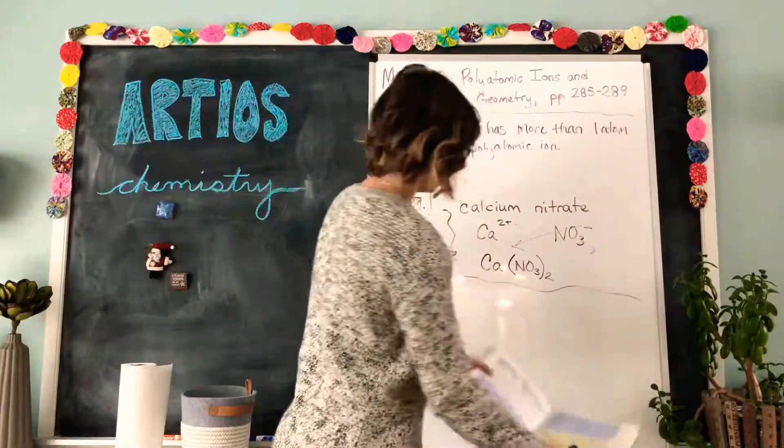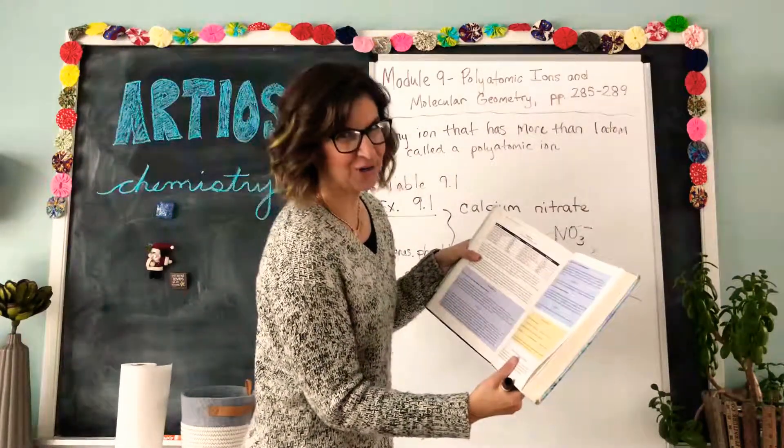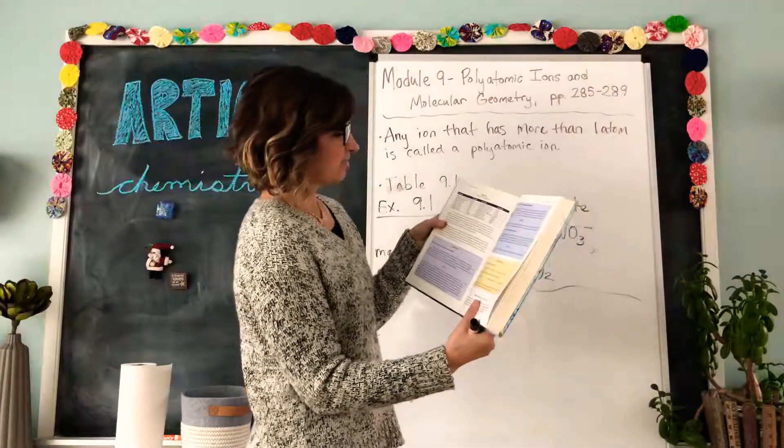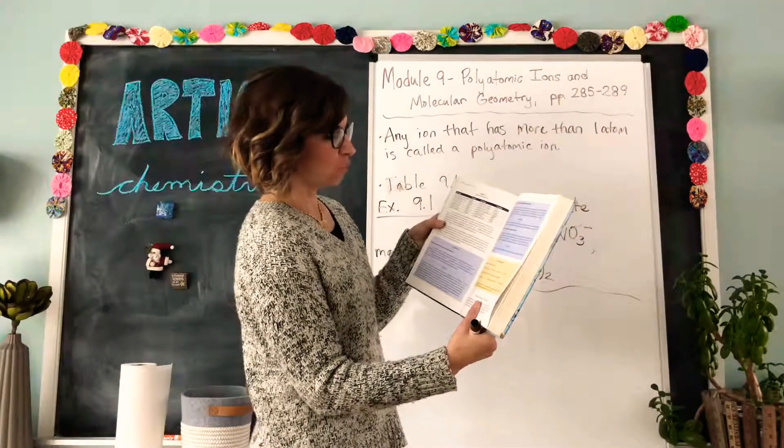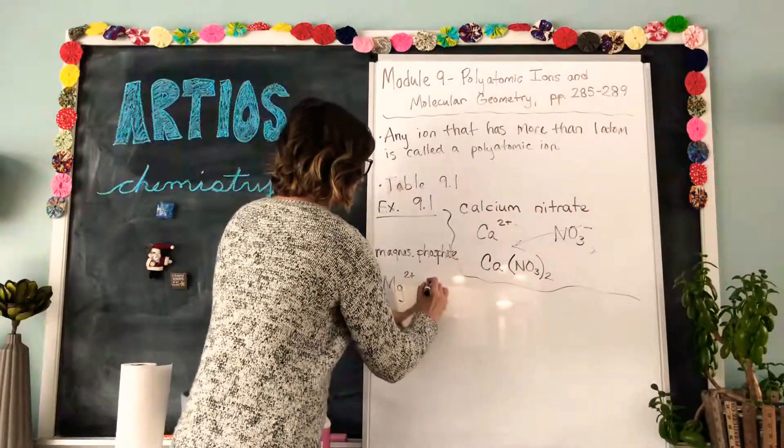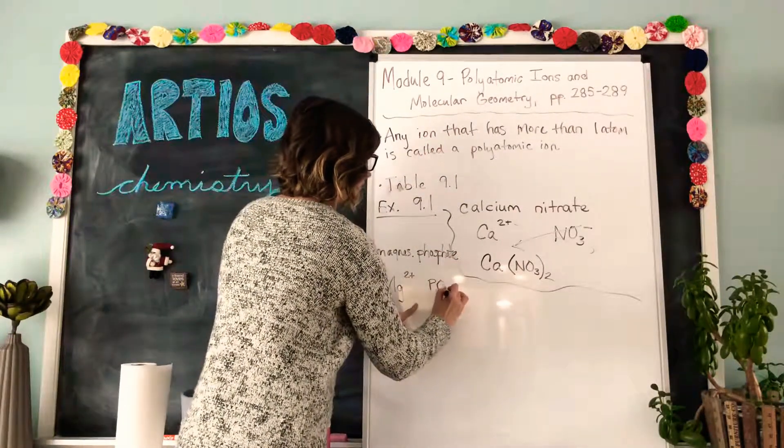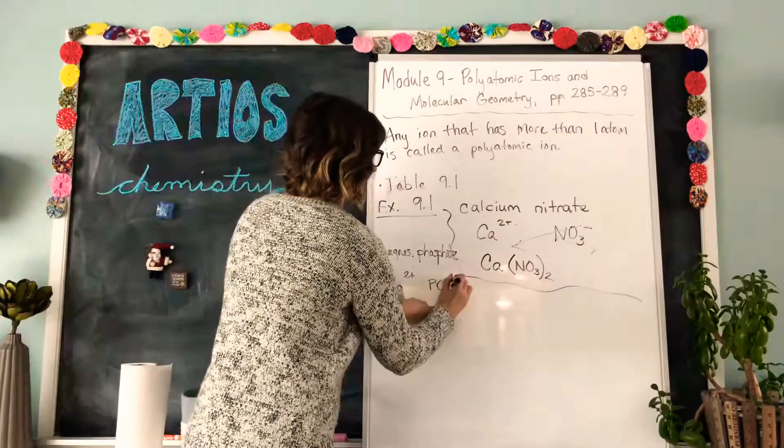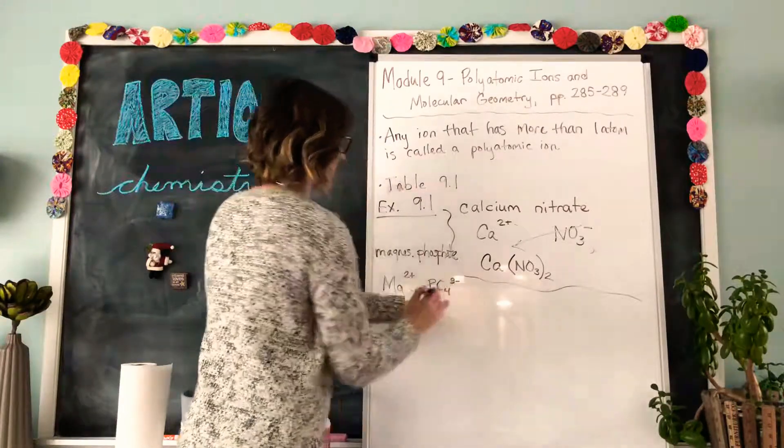Phosphate, look at your table or your index card. Phosphate is PO4 three minus. So I'll write that under phosphate, PO4, and it has an overall charge of three minus.